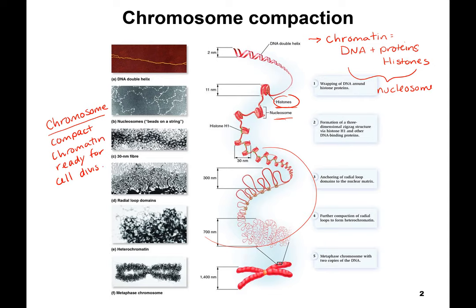We're going to talk about mitosis or meiosis. I always use 'chromosome' — I hardly ever use the word 'chromatin.' Chromosomes and chromatin are still made of the same components: DNA and organizing proteins. So technically, 'chromosome' is supposed to be used when we're talking about mitosis and meiosis.